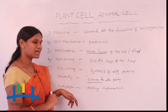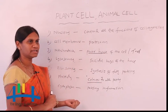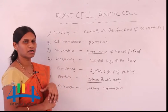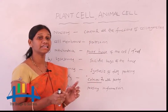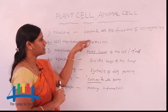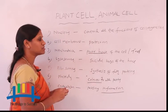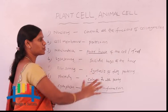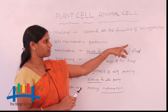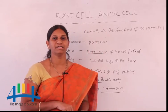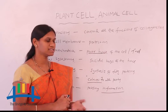The last one is cytoplasm. All cell organelles are present in the cytoplasm — it is like the base for all cell organelles. Cytoplasm is present in both plant and animal cells. The function of cytoplasm is to pass information from one cell organelle to another. So cytoplasm passes information, cell membrane provides protection, and nucleus controls everything. These are all the cell organelles present in plant and animal cells and their functions.